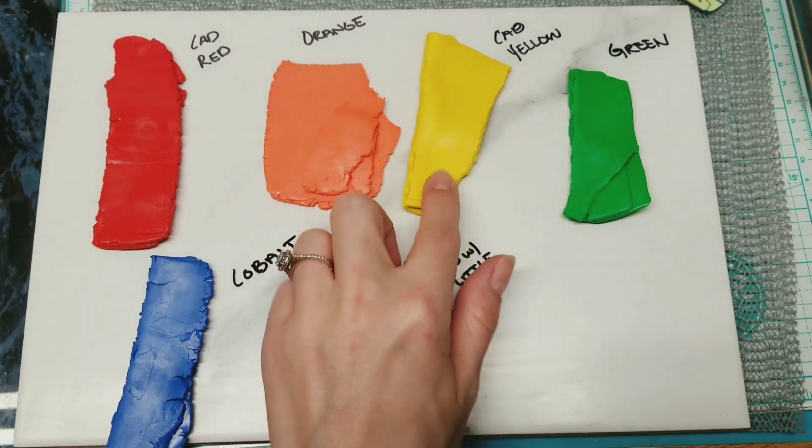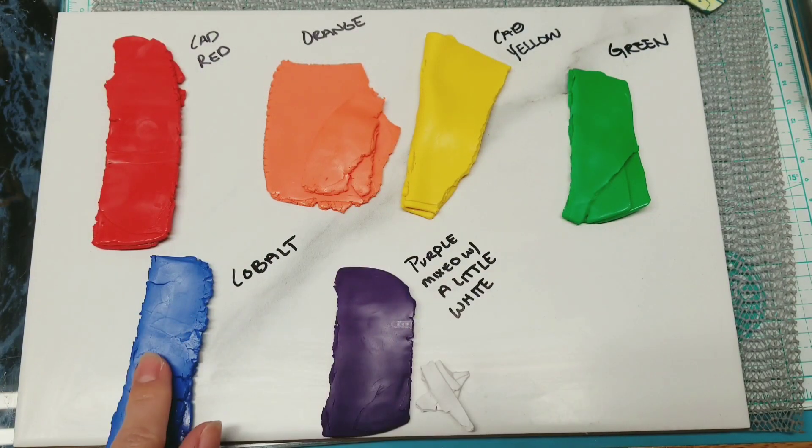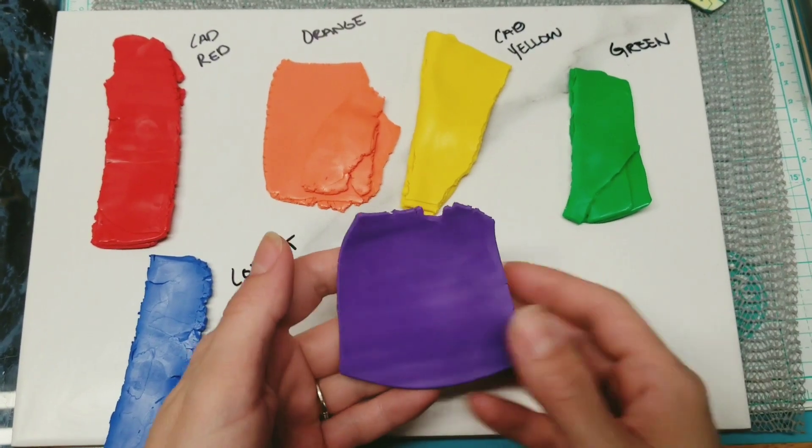Okay, we're starting out with Primo Cad Red, Orange, Cad Yellow, Green, Cobol, and a Purple mixed with a little white.